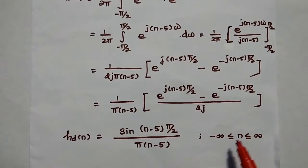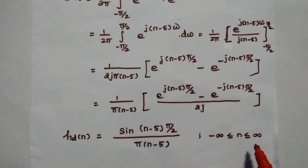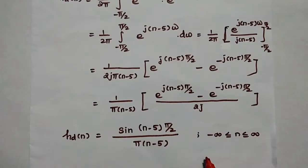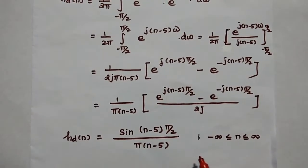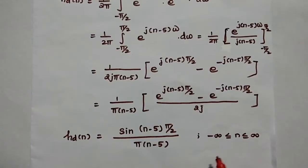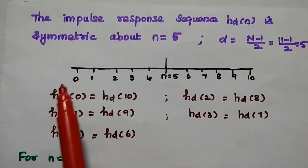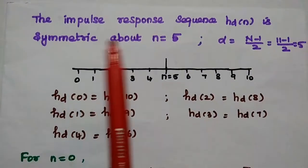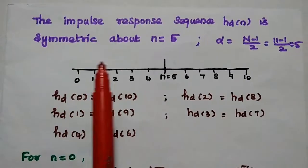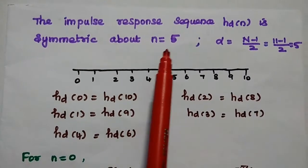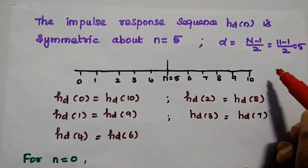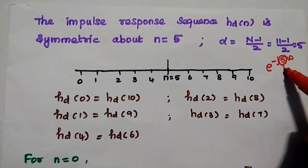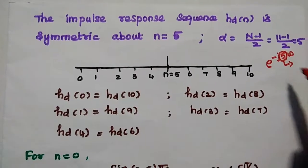Here n varies from minus infinity to plus infinity, making it an infinite duration sequence. But we are going to design an FIR filter, which must have a finite duration sequence. Since the given filter is a symmetric filter, the impulse response sequence hd(n) is also symmetric about n equal to 5, because the exponential term is e^(−j5ω).